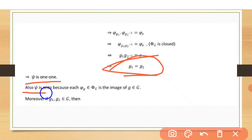Psi is also onto because each phi_g in phi(G) is the image of g in G under psi. When the co-domain and range are the same — every element in phi(G) is covered — the mapping is onto.